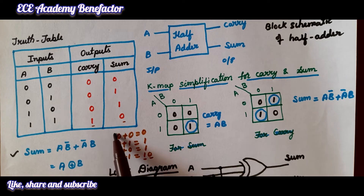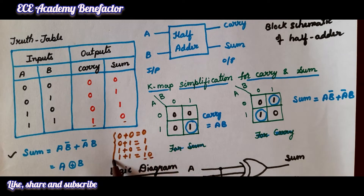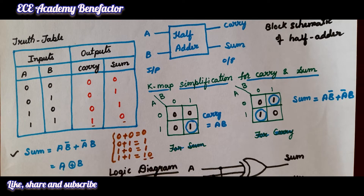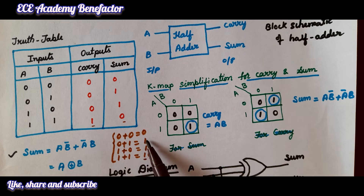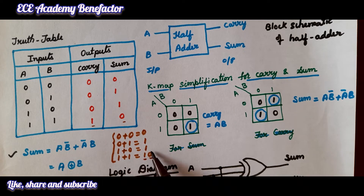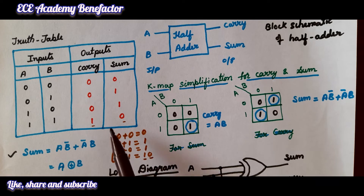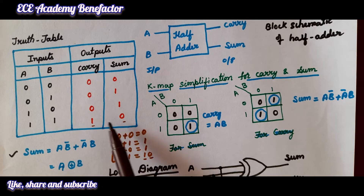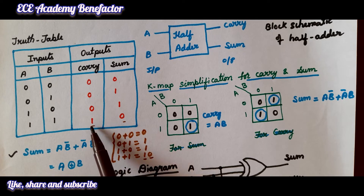This is the binary addition rule: 0 plus 0 is 0; 0 plus 1 is 1; 1 plus 0 is 1; 1 plus 1 is 1,0 where sum is 0 and carry is 1. So we write sum as 0 and carry as 1.